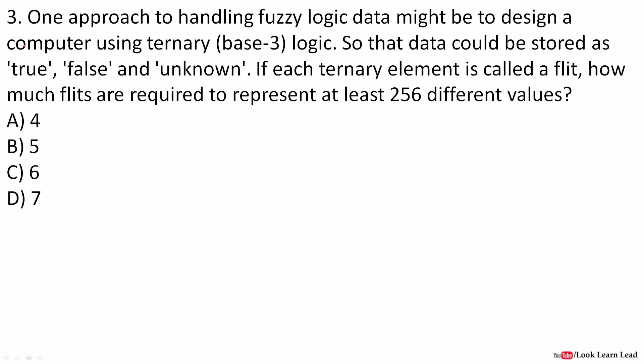One approach to handle fuzzy logic data may be to design a computer system using ternary base logic, so that the data could be stored as true, false, or unknown: zero, one, and unknown. If each ternary element is a flit, how many such flits are required to represent at least 256 different values? Generally we talk about binary where we have zero and one. In case of flit we use bit.